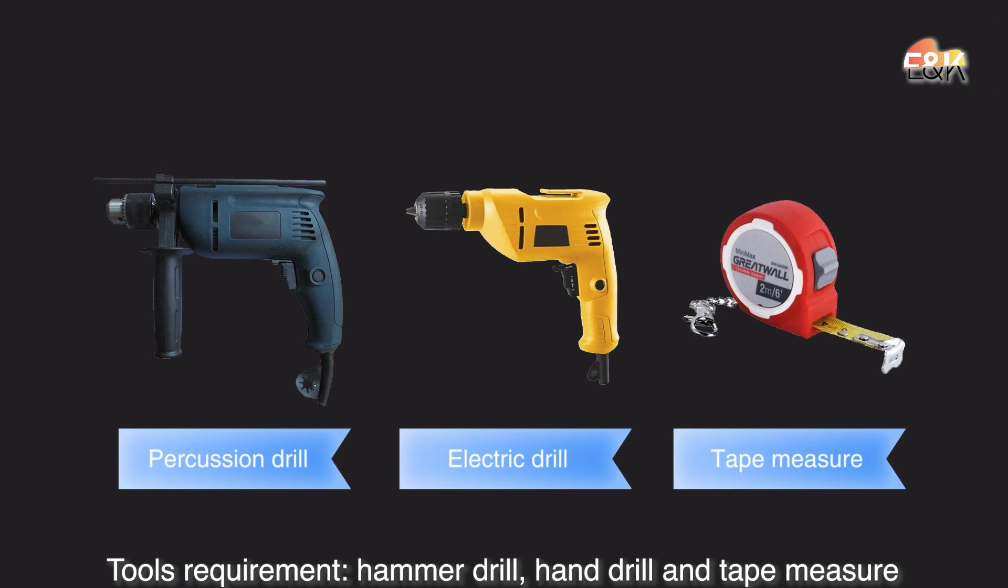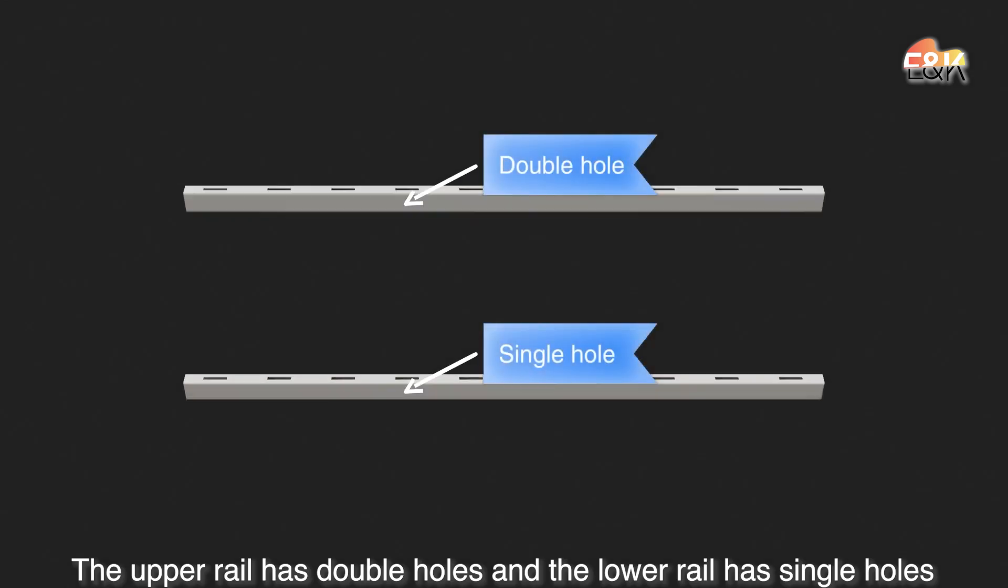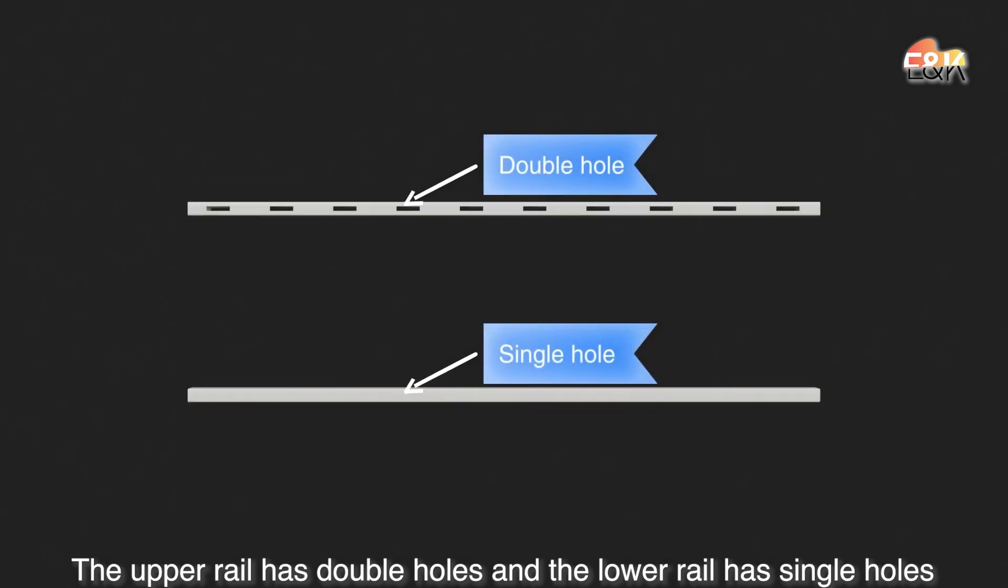Tools requirement: hammer drill, hand drill, and tape measure. The upper rail has double holes and the lower rail has single holes.